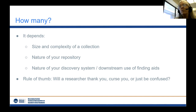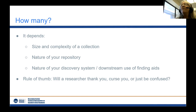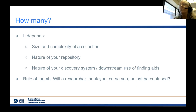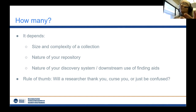We are a general purpose repository, so if I have a collection that has photographs in it, I'll probably just choose the access point 'photographs,' a general term. But if you're a photography repository, you may want to use much more specific terms like silver gelatin prints or albumin prints. The nature of your discovery system and how you want to use your finding aids downstream is also going to have some effect — for example, we always have downstream MARC record generation in mind when choosing access terms and controlled vocabularies.